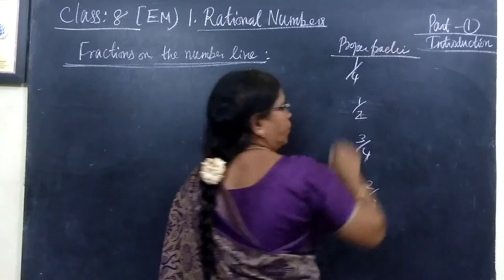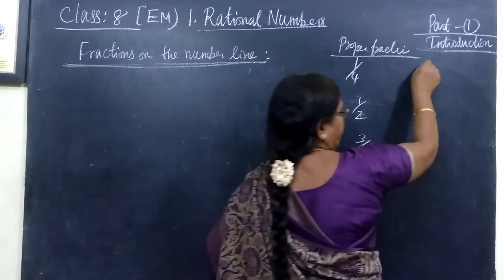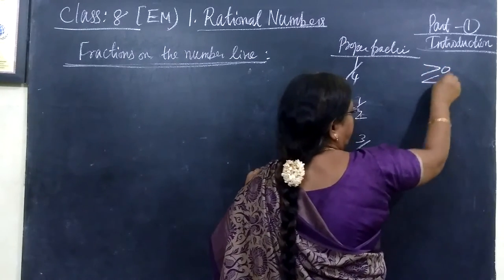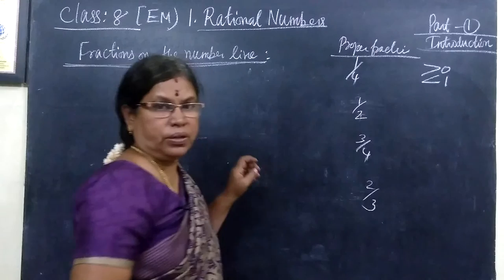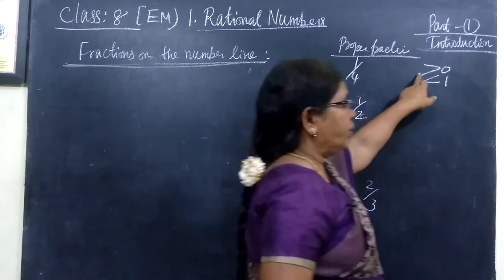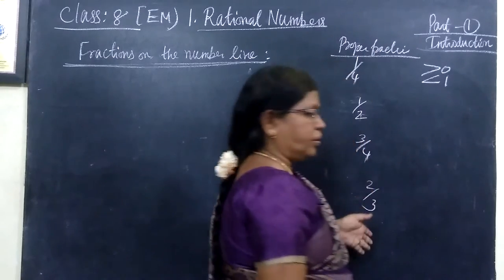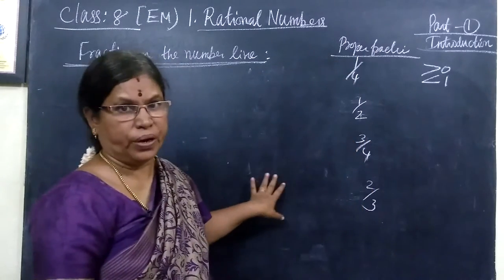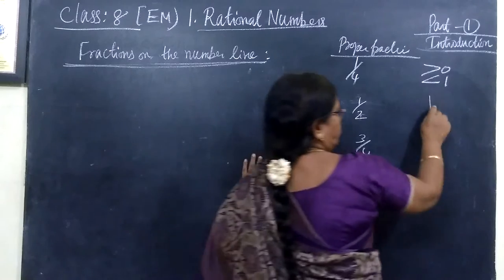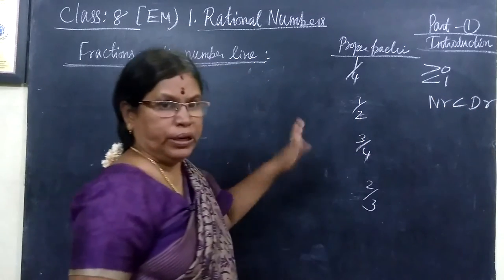Proper fraction. Proper fraction is a fraction which is greater than 0 and less than 1. It is 1 in the numerator and other in the denominator. Greater than 0 and less than 1. And that is a proper fraction. Proper fraction the numerator is less than denominator. Now no need to tell this.